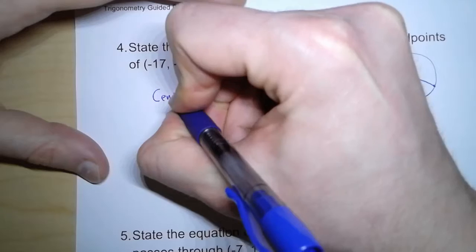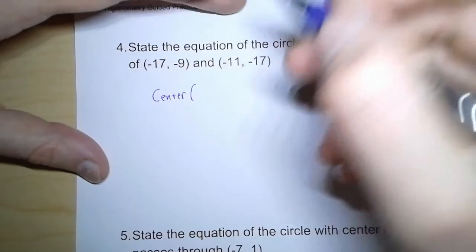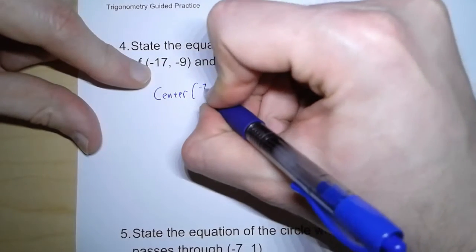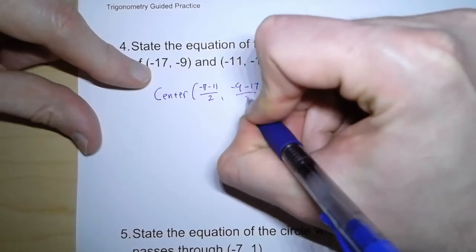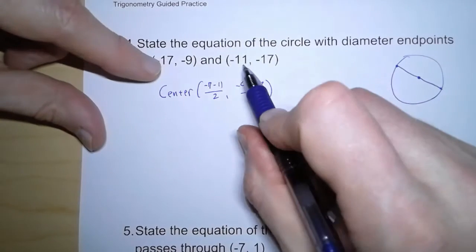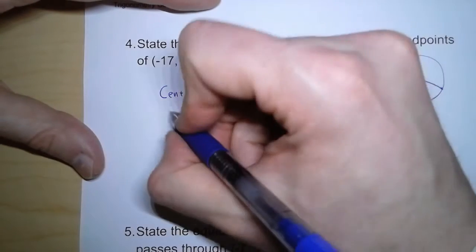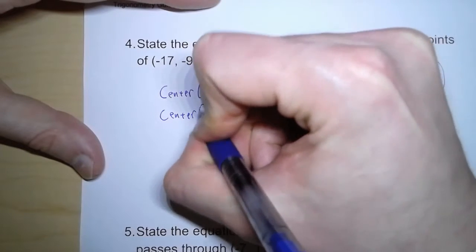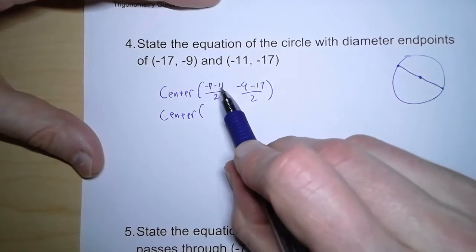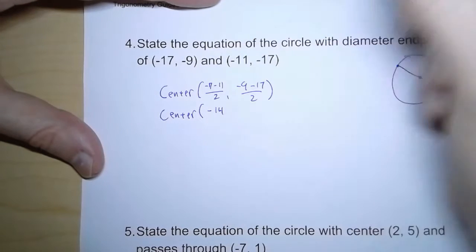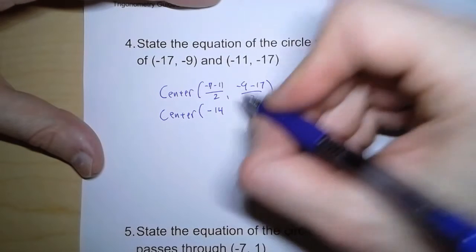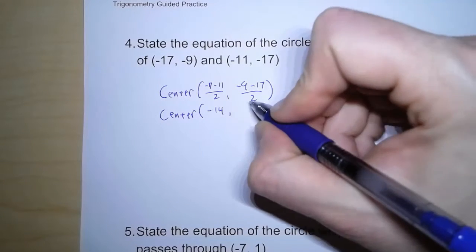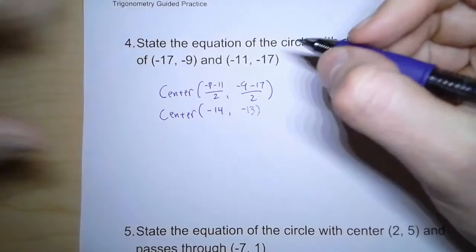So for our center, that's going to be at the average of these two, negative 17 minus 11 over 2, comma, negative 9 minus 17 over 2. So it's just the average of the x values and the average of the y values. So, negative 17 and negative 11, that gives us negative 28. So divide by 2, we get negative 14. Negative 9 minus 17 is negative 26. And we divide that by 2, and we get negative 13. So there is our center.